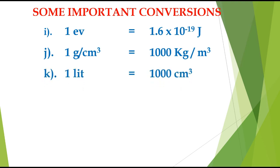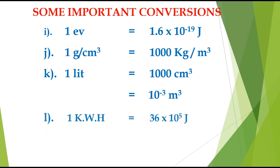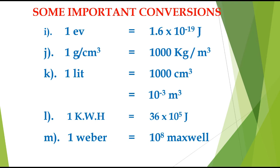1 gram per cubic centimeter equals 1000 kilogram per cubic meter. 1 litre equals 1000 cubic centimeters, which also equals 10⁻³ cubic meter. 1 kilowatt-hour (KWH) — the unit of household electrical energy consumption — equals 3.6 × 10⁶ Joules. 1 Weber equals 10⁸ Maxwell, where Maxwell is the CGS unit of magnetic flux. 1 kilogram-weight equals 9.8 Newtons.